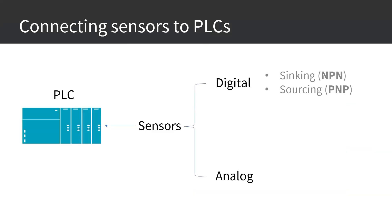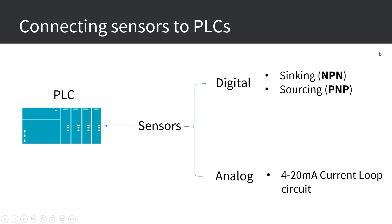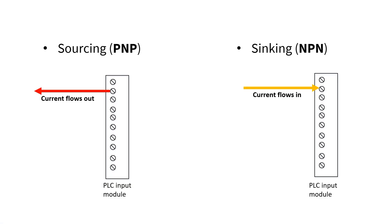When connecting sensors to a PLC, there are two common main circuits: one for digital sensors including sinking and sourcing, and one for analog sensors including the 4 to 20 milliamps current loop circuit. There are other methods depending on the sensor type, like for example fieldbus communication, PROFIBUS, etc.